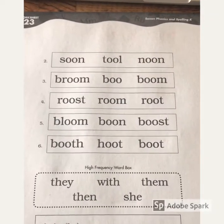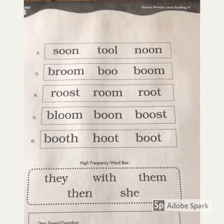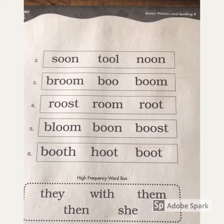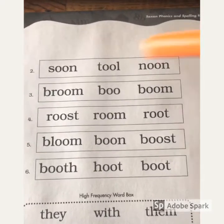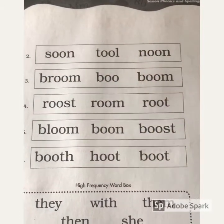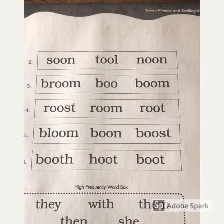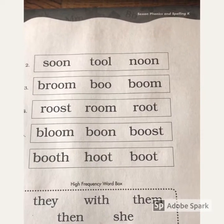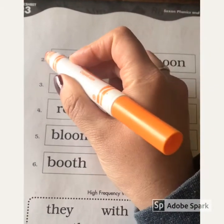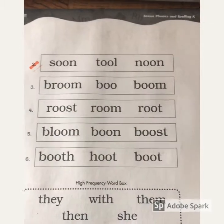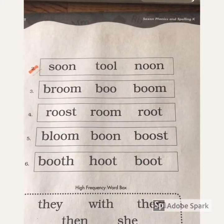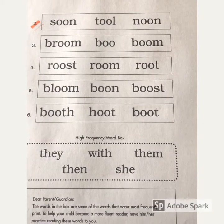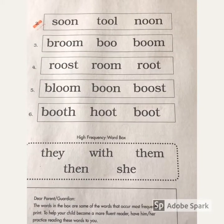On the back side, if you're not ready yet, just click pause. But if you are ready, let it keep going and we'll do the back together. Number two — circle the word noon: n-oo-n, noon. Number three — circle the word broom: br-oo-m, broom.